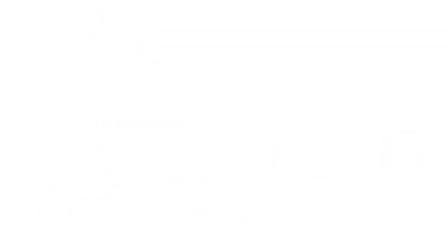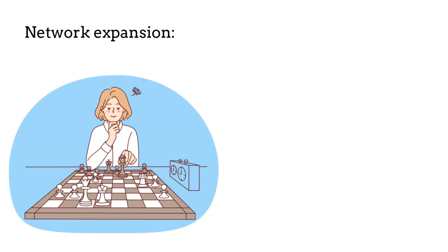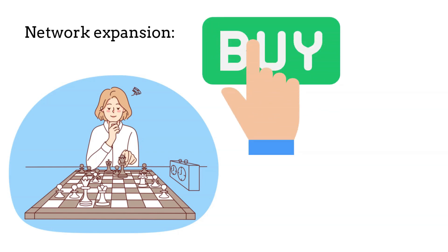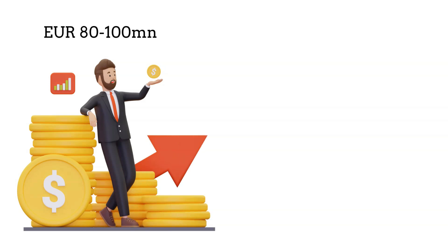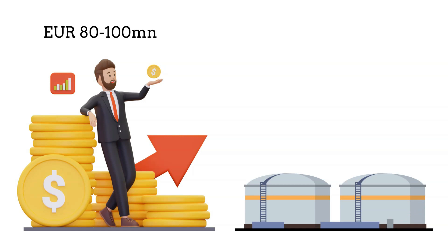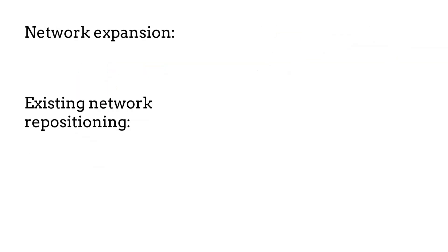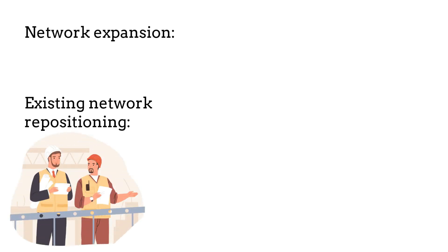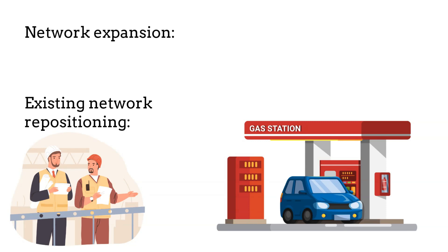Network expansion: since we are eyeing 40 to 60 new stations in a few countries, that restricts us to acquiring a few smaller independent chains since the markets are already saturated — building stations from scratch would be difficult. Such activity will cost at least 80 to 100 million euros depending on network quality, station condition, and especially if that includes storing capacity to increase wholesale as well. Rebranding costs are included. Existing network repositioning: our existing network at neighboring markets is in good condition — we should expect 5 to 10 million euros per annum for maintenance capex, including periodic reconstructions, light rebranding, improving non-fuel offerings, etc. That's a total of 30 to 60 million euros.